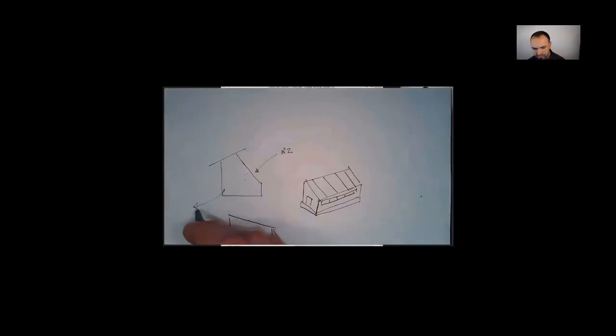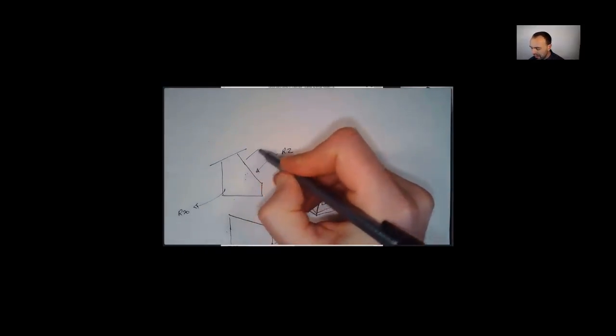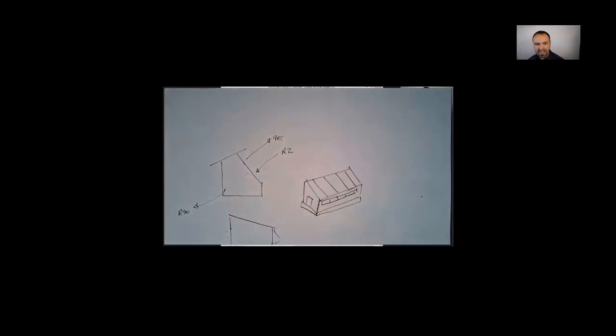Now, all the other walls on the greenhouse themselves have an R-value of, like we said, about 20. And so, 90% of the energy leaves the glazing surface at night.